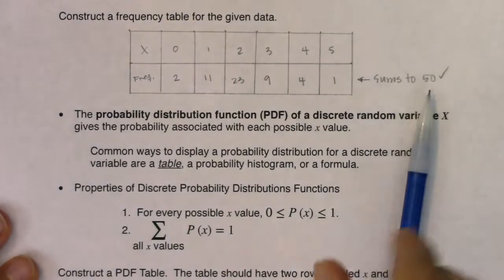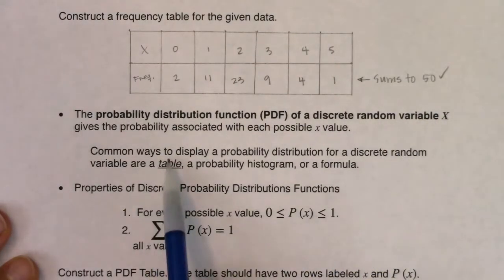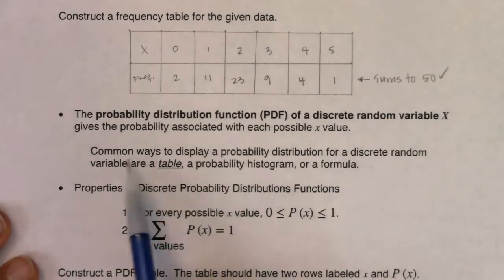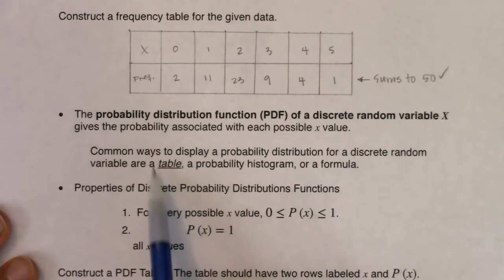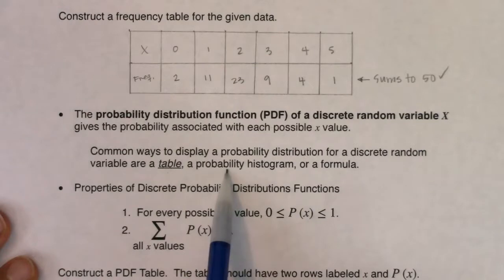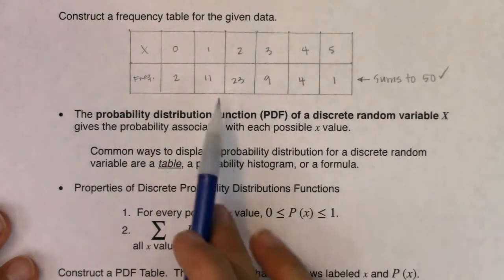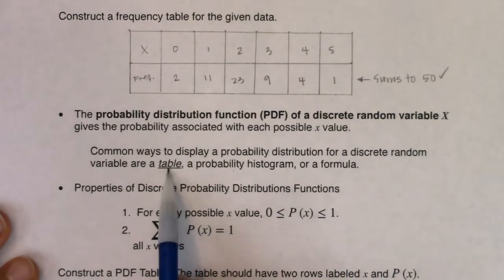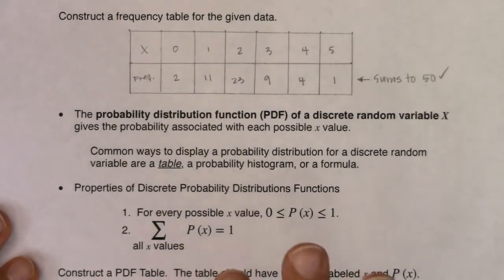Common ways to display a probability distribution function for a discrete random variable are a table - I underline that because that is the most common one that we're going to get. You can make a histogram, I'll show you how to do that, or a formula. We won't really get to formulas as much, but we'll spend some time on tables.